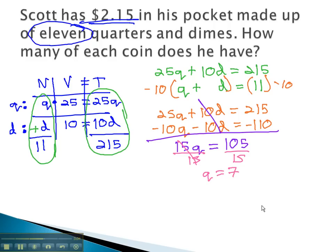We still need to find our dimes, though, which we can find by going back to one of the original equations. The second equation's probably the easiest to use. q plus d, or 7 plus d, equals 11. Subtracting 7 from both sides, we find out that d, or the number of dimes, is equal to 4.